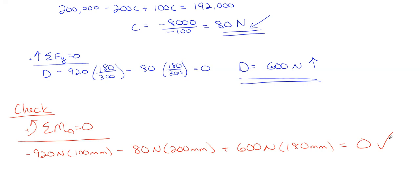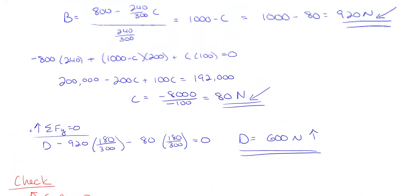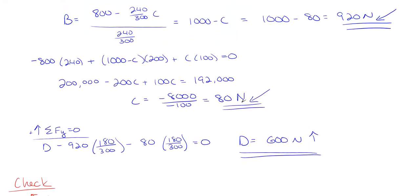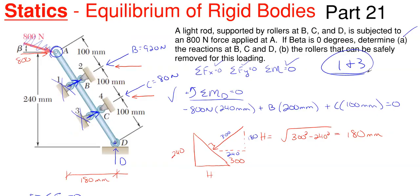To summarize: B equals 920 newtons, C equals 80 newtons both in the down-left direction, D equals 600 newtons upward, and rollers 1 and 3 may be removed and remain safe. I hope this video was helpful — if you want to see more problems solved, check out the other videos on our channel. Please like, leave a positive comment, and subscribe. Thank you for watching and I hope you have a great day.